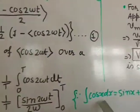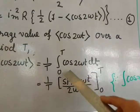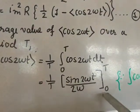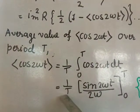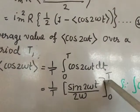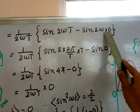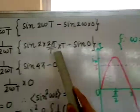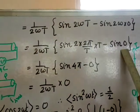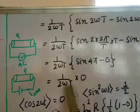The integral of cos is sin, so the integral of cos(2ωt) is sin(2ωt), divided by the coefficient of t, which is 2ω. Evaluating from 0 to T: (1/T) · (1/2ω) · [sin(2ωt)]₀ᵀ = (1/2ωT) · [sin(2ωT) − sin(0)]. Substituting ω = 2π/T, we get 2ωT = 4π, and sin(4π) = 0, sin(0) = 0. Therefore, the average of cos(2ωt) = 0.